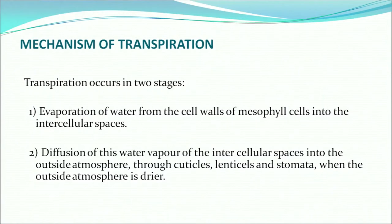Transpiration plays an important role in mineral salt absorption, water absorption, and the plant's cooling system. Transpiration occurs in two stages: first, evaporation of water from the cell walls of mesophyll cells into the intercellular spaces; second, diffusion of water vapor from the intercellular spaces into the outside atmosphere through cuticles, lenticels, and stomata. When the outside atmosphere is drier, water vapor diffuses out through cuticles, lenticels, and stomata.